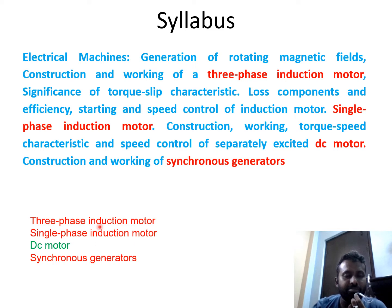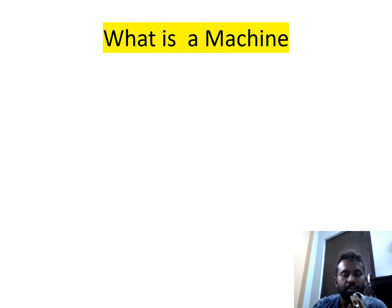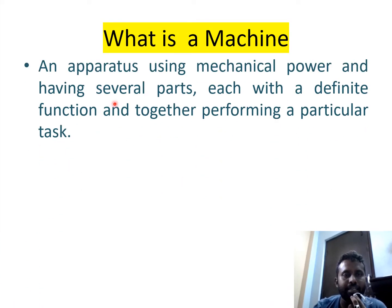In order to understand the rest of the machines, you first have to understand the DC motor. Today's topic is DC motor construction. A machine is an apparatus using mechanical power and having several parts, each with a definite function, together performing a particular task. A machine is also a piece of equipment which uses electricity to do a particular kind of work.